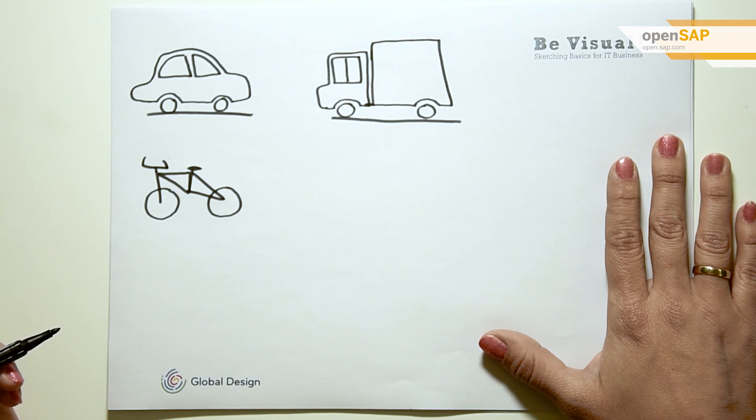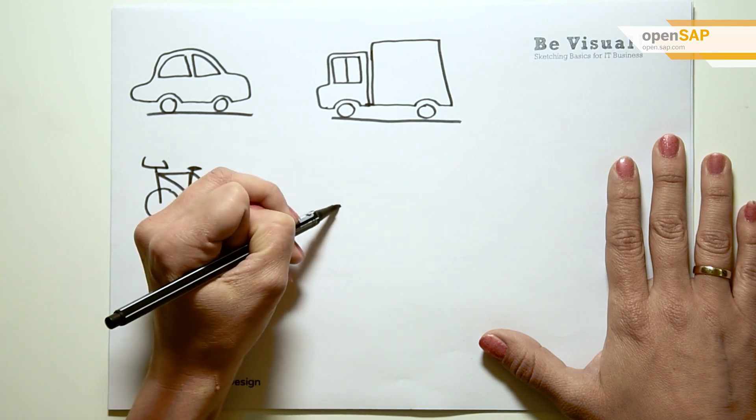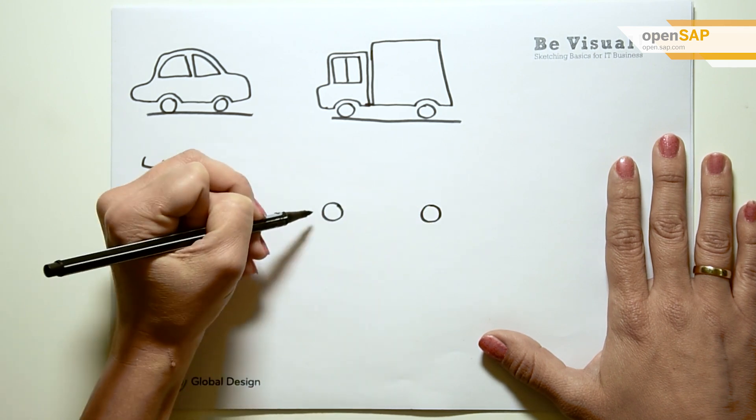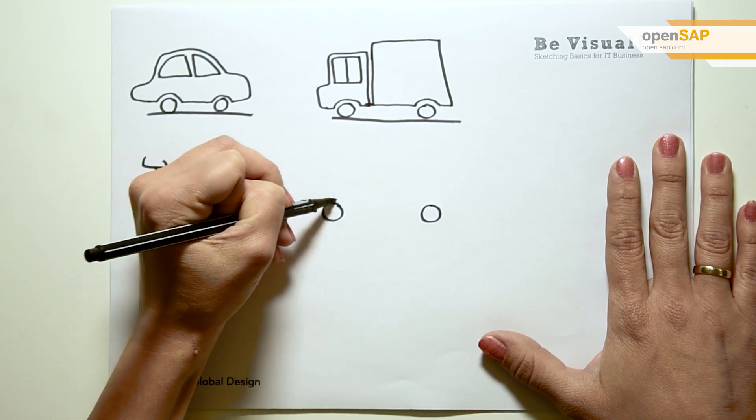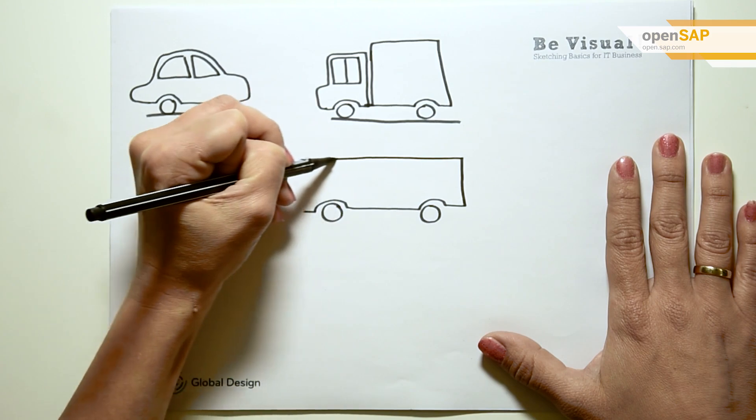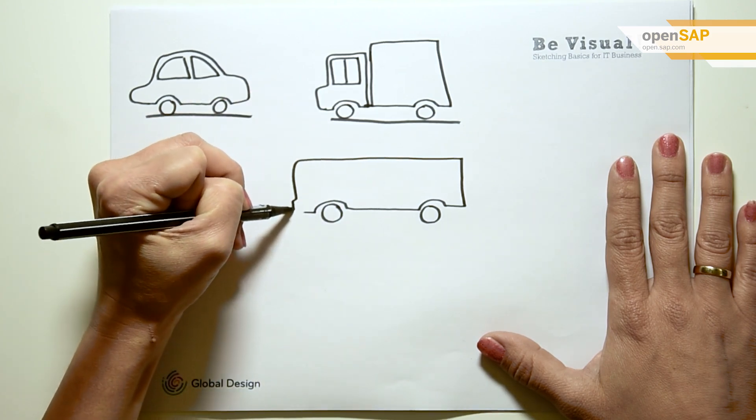A bus stands for a group of people being transported. We start again with the wheels and sketch chassis around it. In the front, the driver's cabin and the front door is positioned. Add a few windows. A bus might have a round or more squared appearance. That varies.